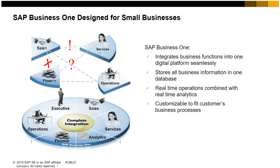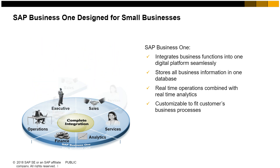SAP Business One is specifically designed to meet today's small and mid-size business needs and challenges. It completely removes the problems associated with having disconnected business processes or systems. It integrates and streamlines all business functions across sales, marketing, customers, financials, and operations — all on a single digital platform, so your business operates like a seamless one. It stores all critical business information in one database, so you can instantly access it without having to get information from different systems that often do not agree with each other.